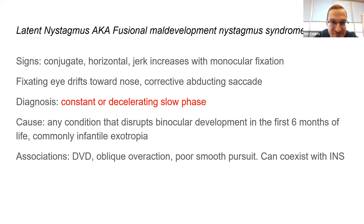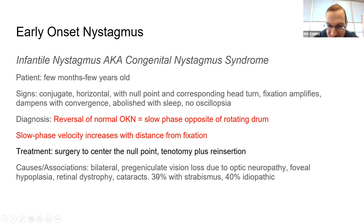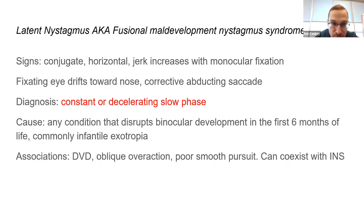For congenital nystagmus, think of pre-geniculate vision loss: foveal hypoplasia, retinal dystrophy, cataracts, or infantile esotropia with strabismus. Many cases are idiopathic. Latent nystagmus occurs with any condition that disrupts binocular development early, especially infantile esotropia. DVD is commonly associated.